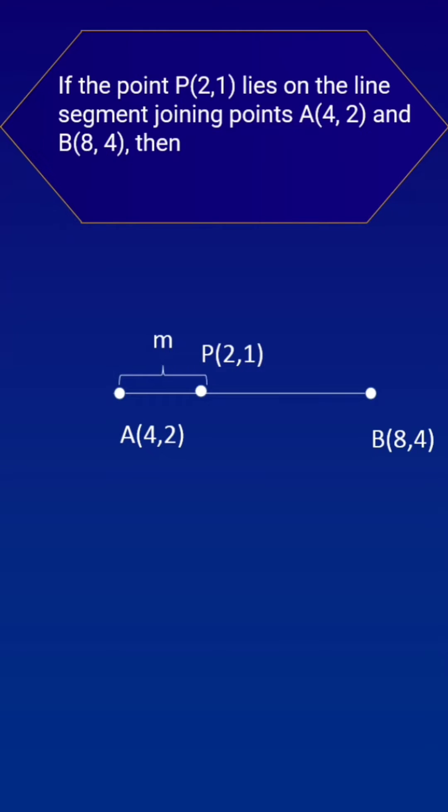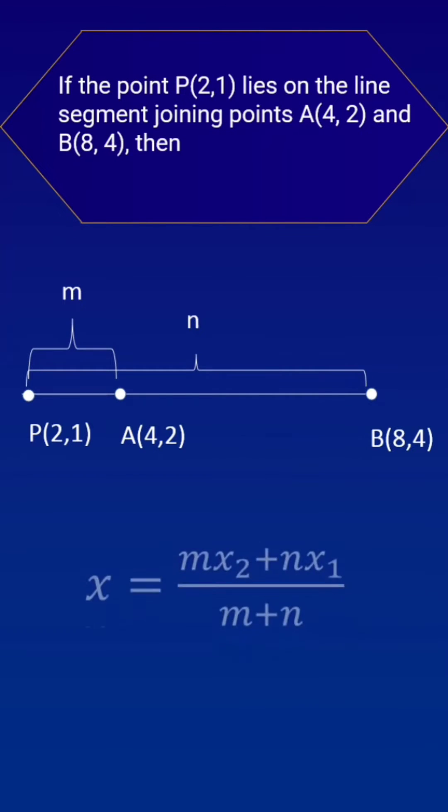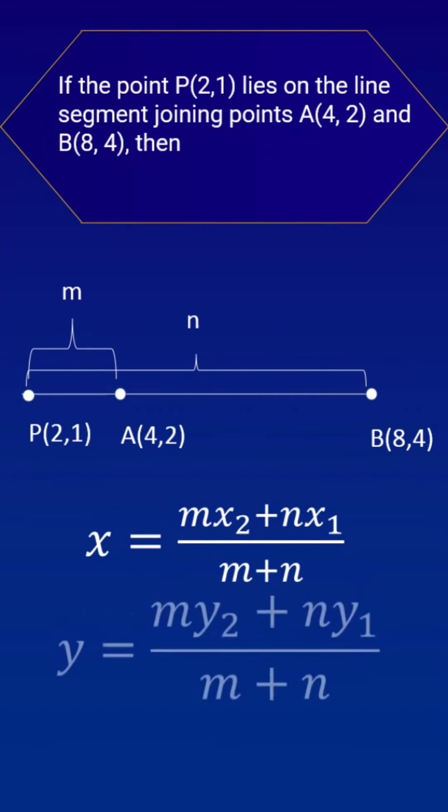The point may lie internally or externally and divides the line segment in the ratio m is to n. We can find the ratio by using section formula. Let us use this formula.